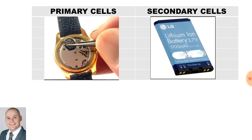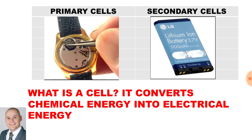There are two types of cells. We get primary and secondary. Primary such as a watch battery and secondary such as a cell phone battery. What is a cell? It converts chemical energy into electrical energy.